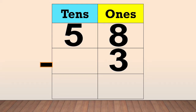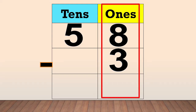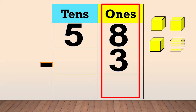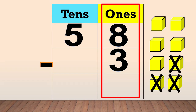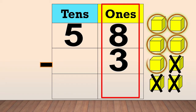Next, we subtract the ones: 8 minus 3. We draw 8 boxes equal to the minuend — 1, 2, 3, 4, 5, 6, 7, 8. Then, cross out the boxes equal to the subtrahend: 1, 2, 3. Now, count the remaining boxes: 1, 2, 3, 4, 5. We put 5 in the ones column.